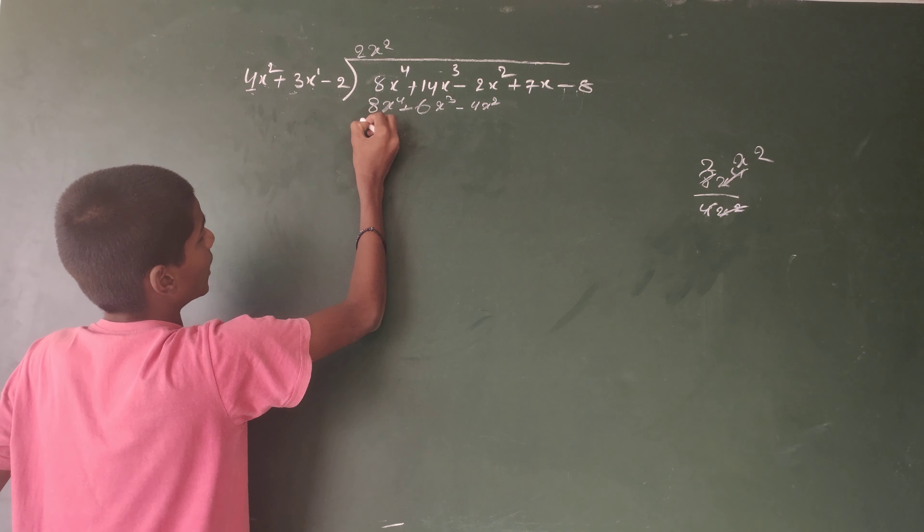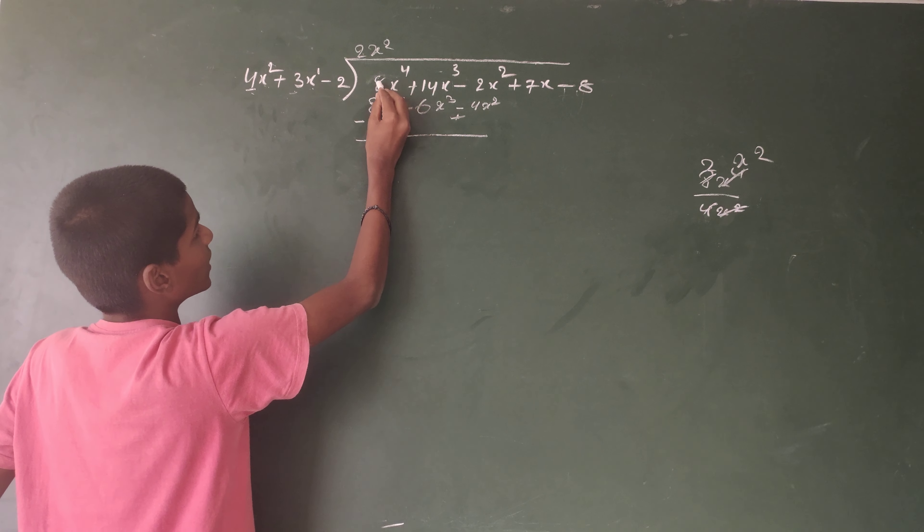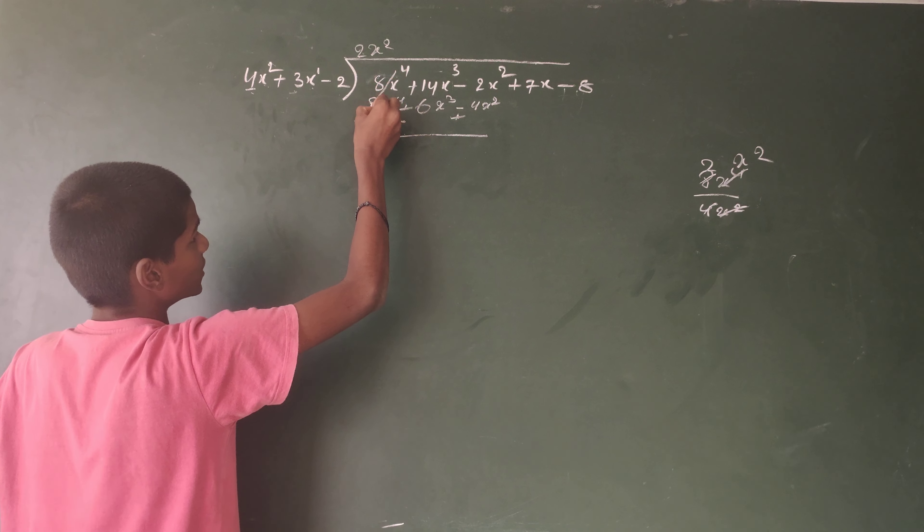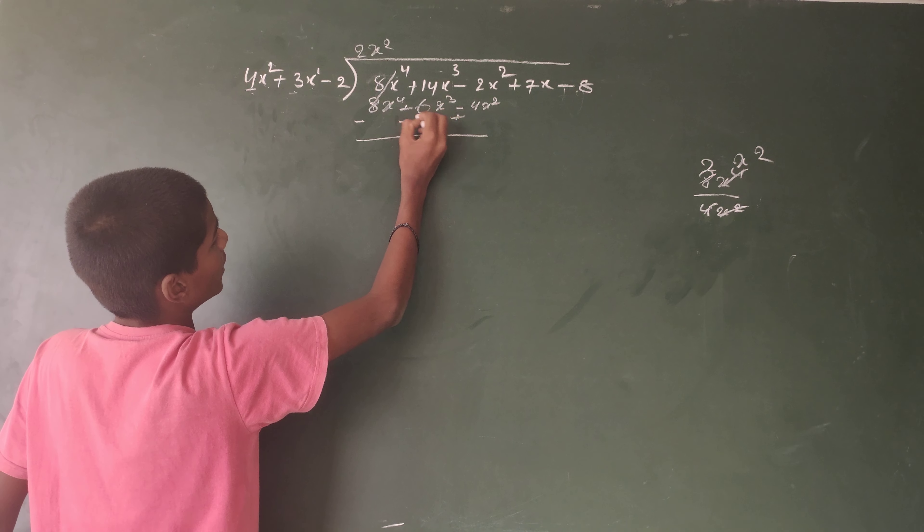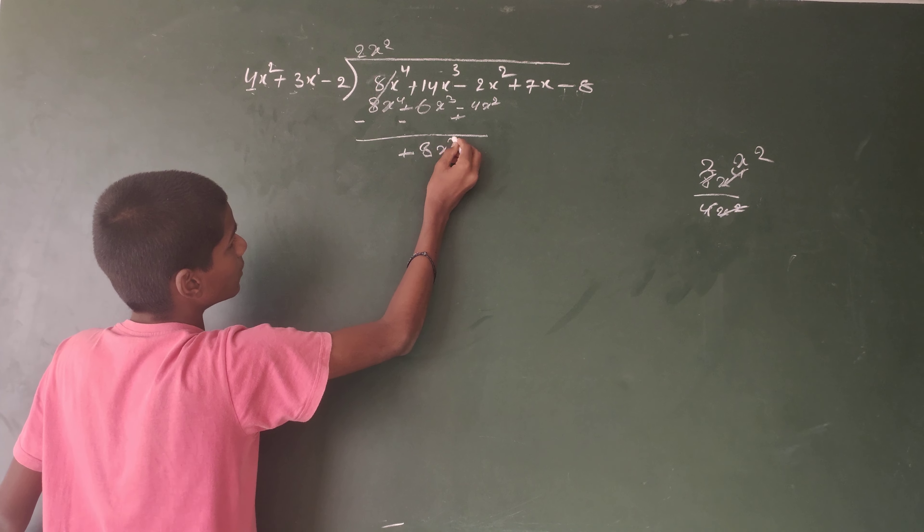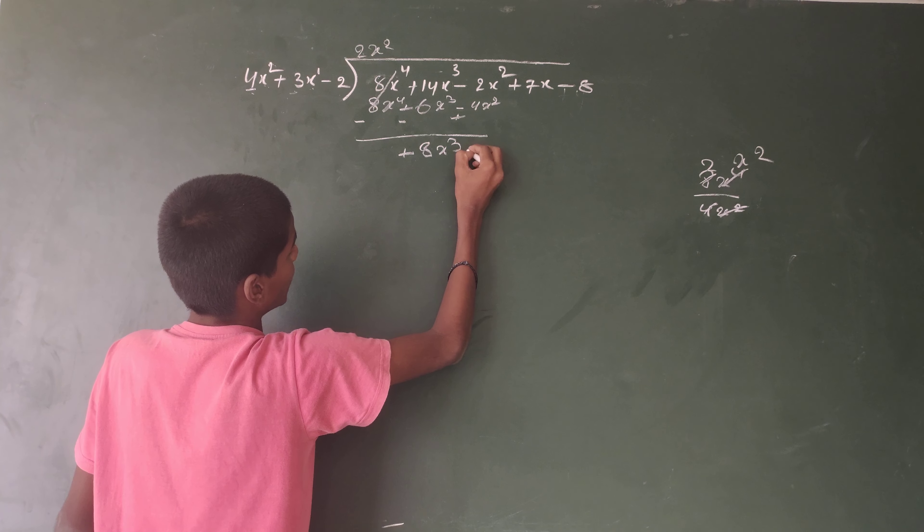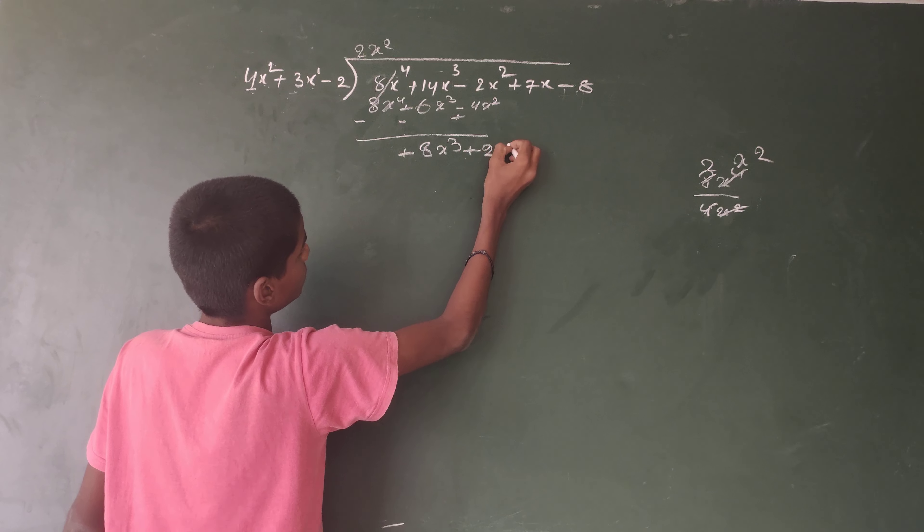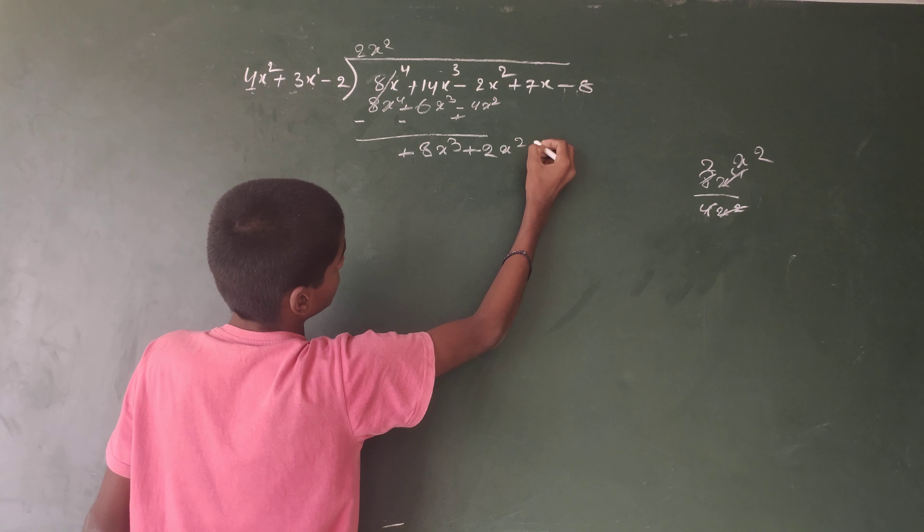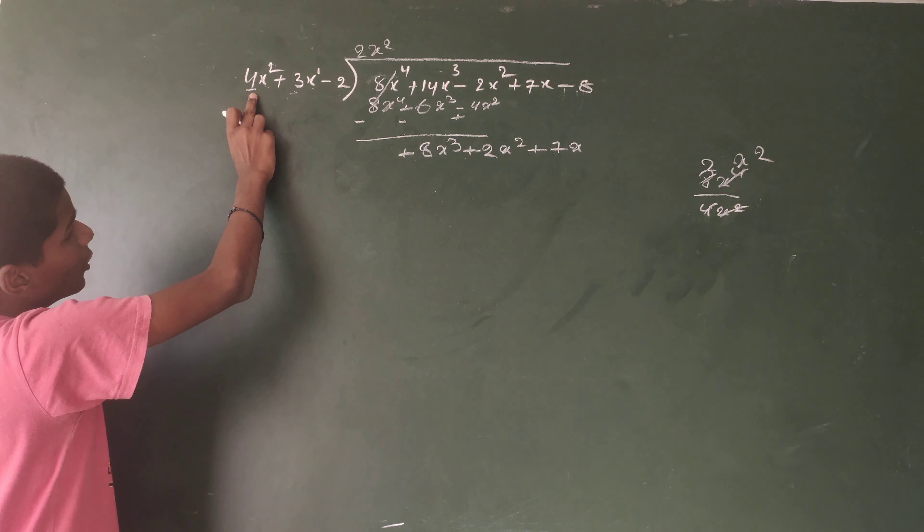Change minus to plus. Plus 8x⁴ minus 8x⁴ cancel. Plus 14x³ minus 6x³ is plus 8x³. Plus 4x² minus 2x² plus 2x² equals 4x² plus 7x. Bring down terms. Again 4x² divided by 8x³.